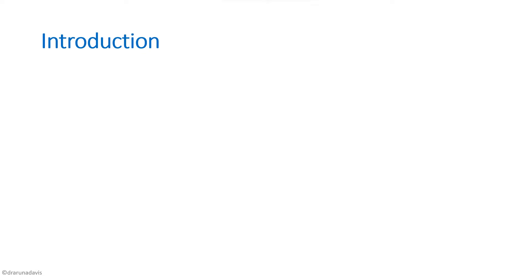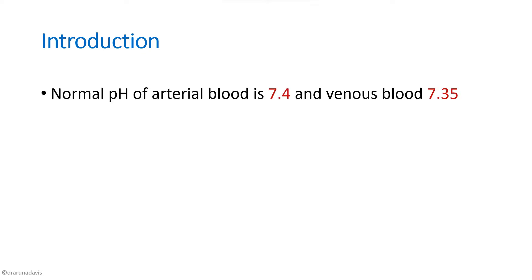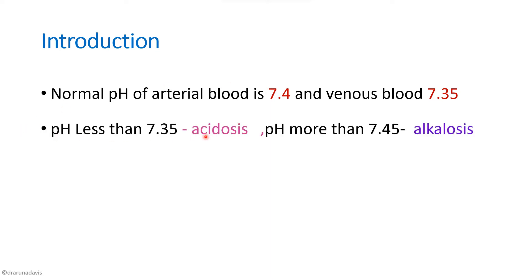In the introduction of the answer, we have to write about the importance of acid-base balance. The normal pH is around 7.35 to 7.45. The normal pH of arterial blood is 7.4 and venous blood is 7.35. This is the normal range of body fluid pH. A pH less than 7.35 is considered acidosis, while a pH more than 7.45 is considered alkalosis.